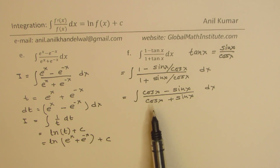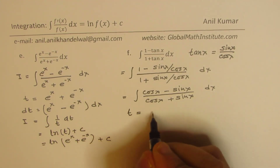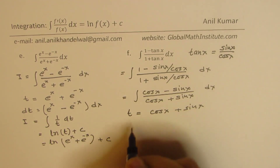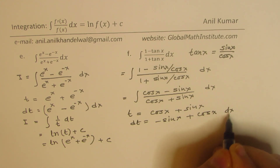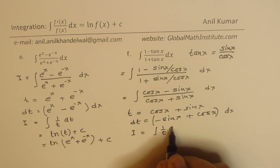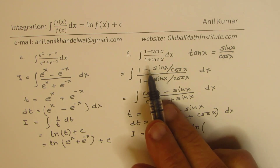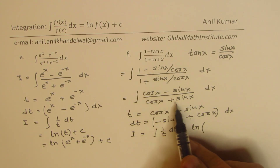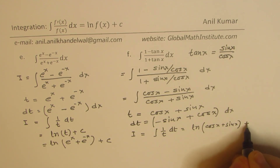The derivative of cos x is −sin x and the derivative of sin x is cos x, so the numerator is the derivative of the denominator. We apply the same strategy: let t = cos x + sin x, so dt = (−sin x + cos x) dx. Therefore the integral is 1/t dt, which equals ln(cos x + sin x) + c.